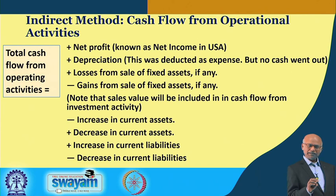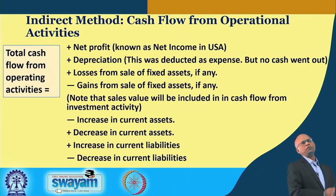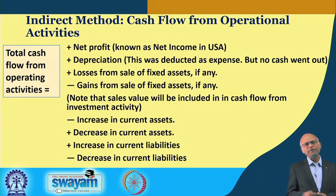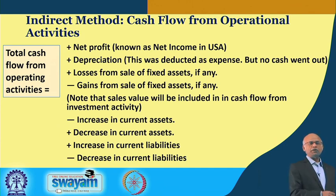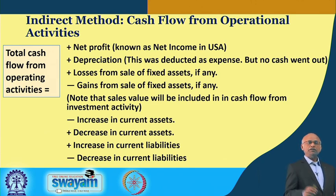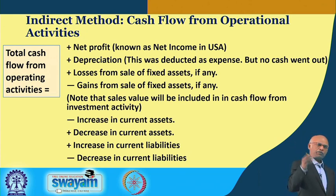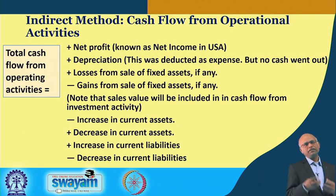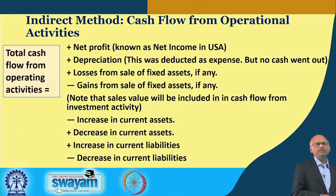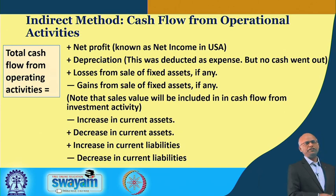Depreciation is an expense just to apportion a part of the cost of machinery and furniture. When you estimate net profit, you apportion that as an expense, so your net profit becomes reduced by that amount and you pay less tax. But because no cash has actually gone out — even though we deducted it from sales — we add it back, because that cash is still with us. So: net profit, then make the adjustment for non-cash expenses — add back depreciation.